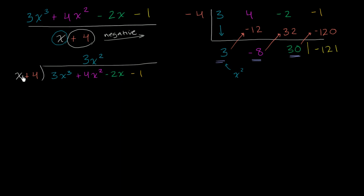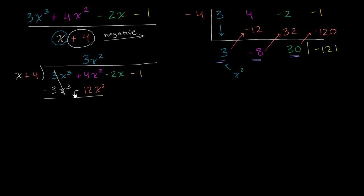Now let's take this 3x squared and multiply that times x plus 4. So 3x squared times x is going to be 3x to the third, and 3x squared times 4 is going to be 12x squared. And now we'll want to subtract this. So now we subtract this out, and we are left with these guys canceling out. You have 4x squared minus 12x squared, which gives you negative 8x squared.